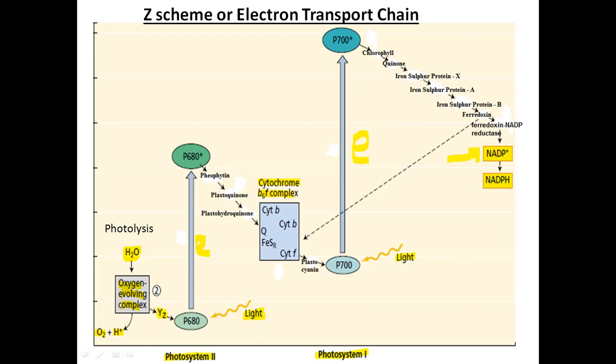P680 refers to the wavelength of 680 nanometers. Inside the leaves, chlorophyll molecules absorb light at 680 nanometers in the red region, therefore it is called P680. In the case of photosystem 1, P700 is mentioned — the light is absorbed by chlorophyll molecules at a wavelength of 700 nanometers in the far-red region.